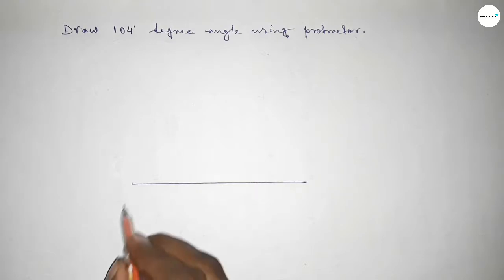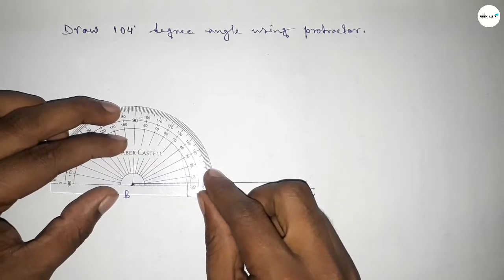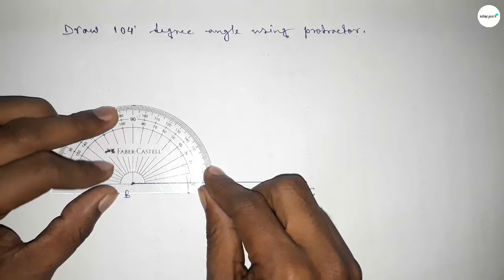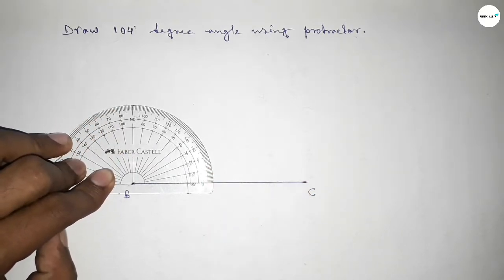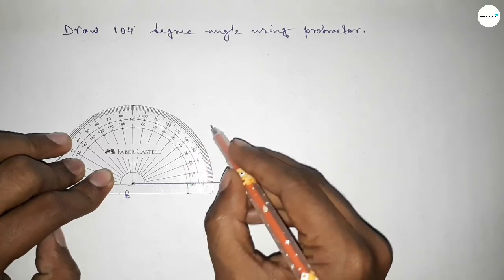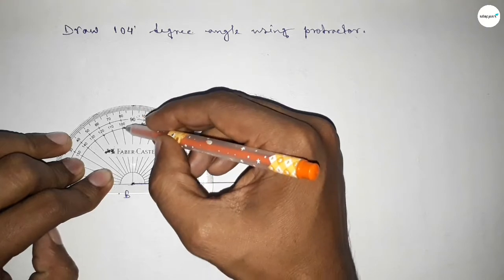Next, taking here point B and here point C. Now putting the protractor on point B perfectly, then counting the angles. So this is starting angle: 0, 10, 20, 30, 40, 50, 60, 70, 80, 90, and this is